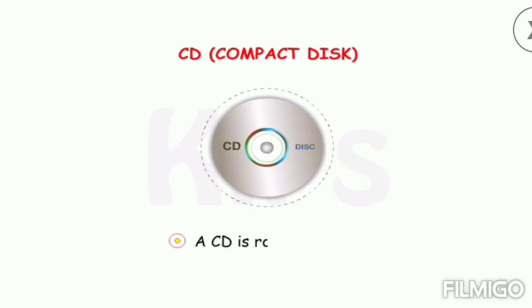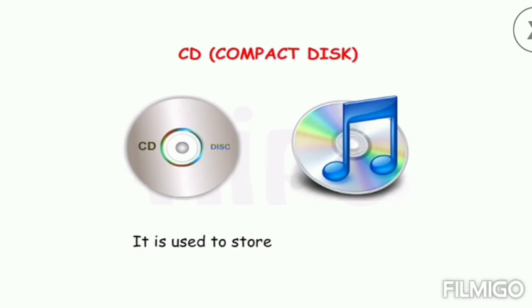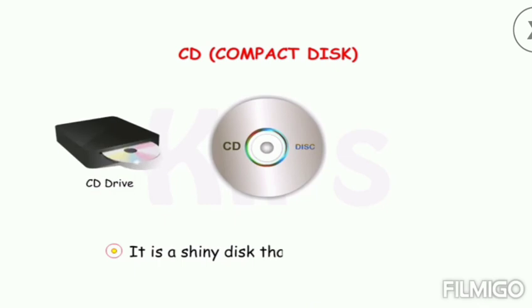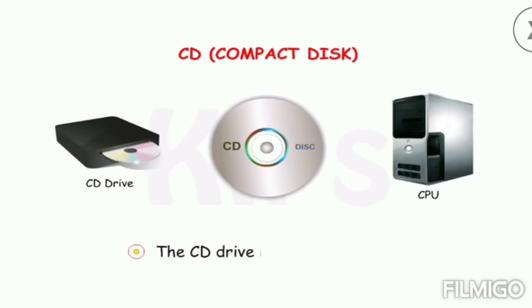A CD, or compact disc, is round in shape and is used to store a lot of information. It is a shiny disc that runs on a CD drive. The CD drive is fixed in the CPU.